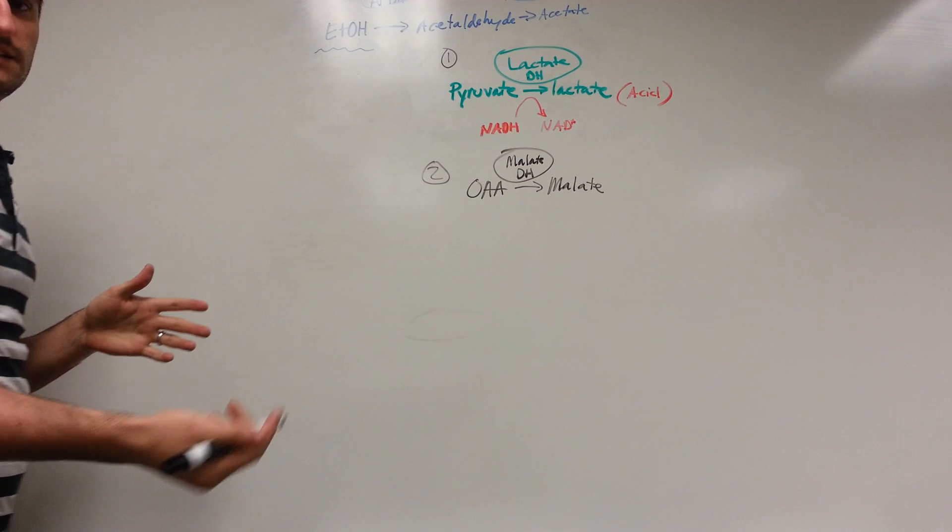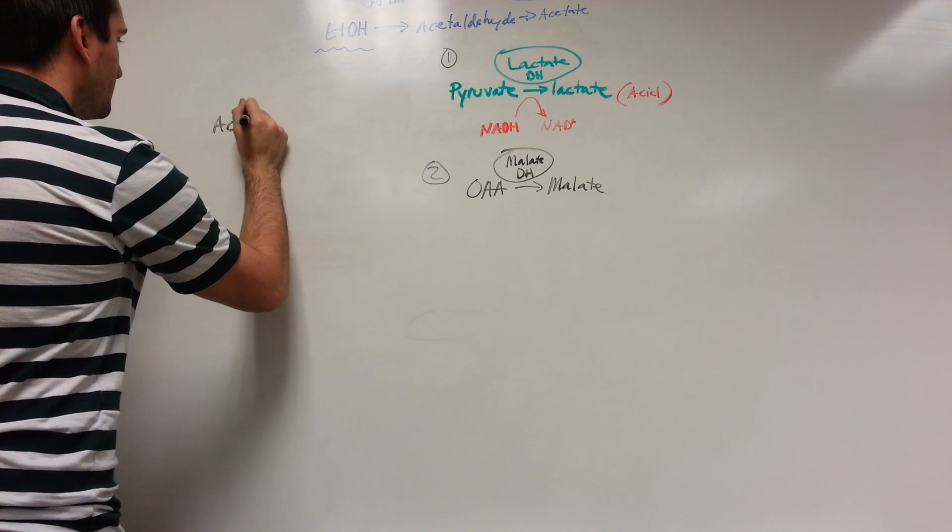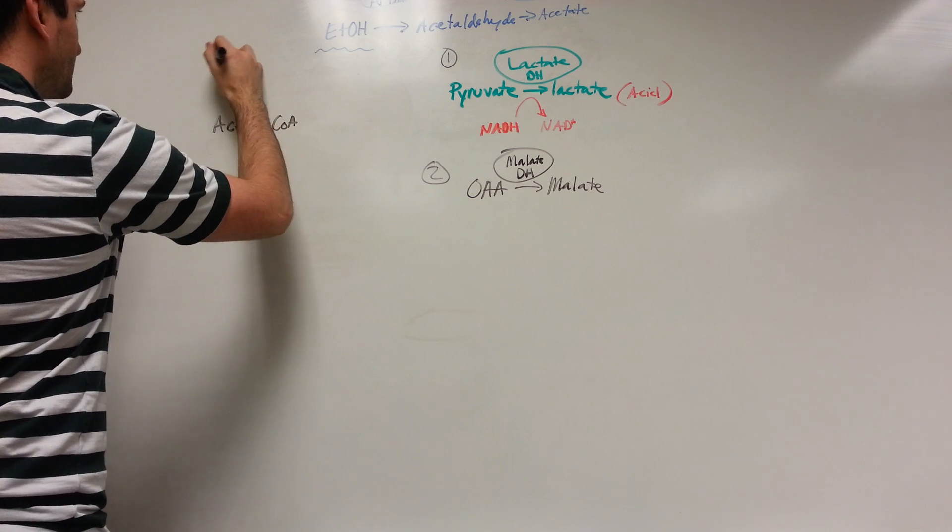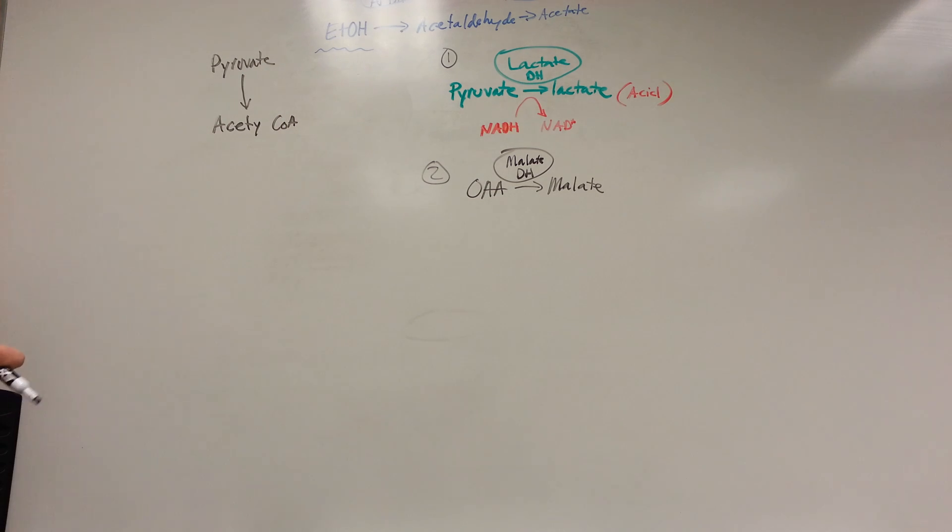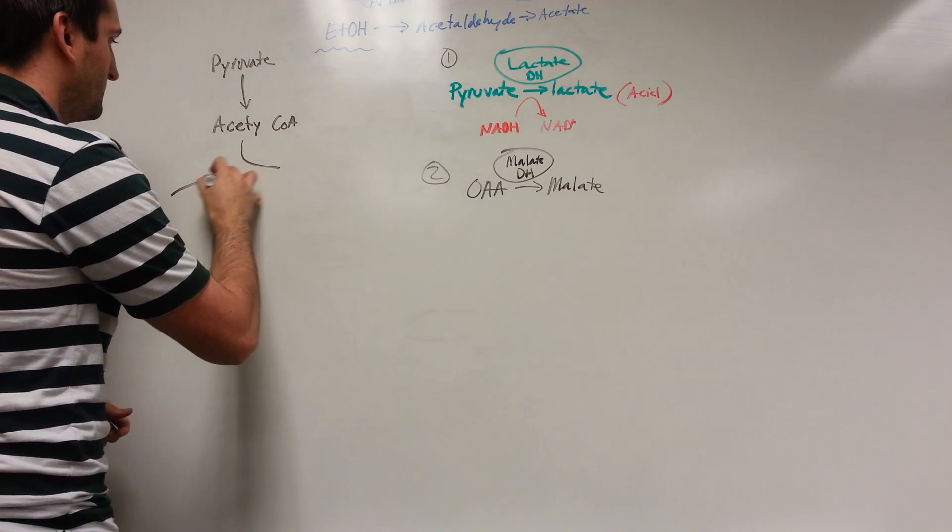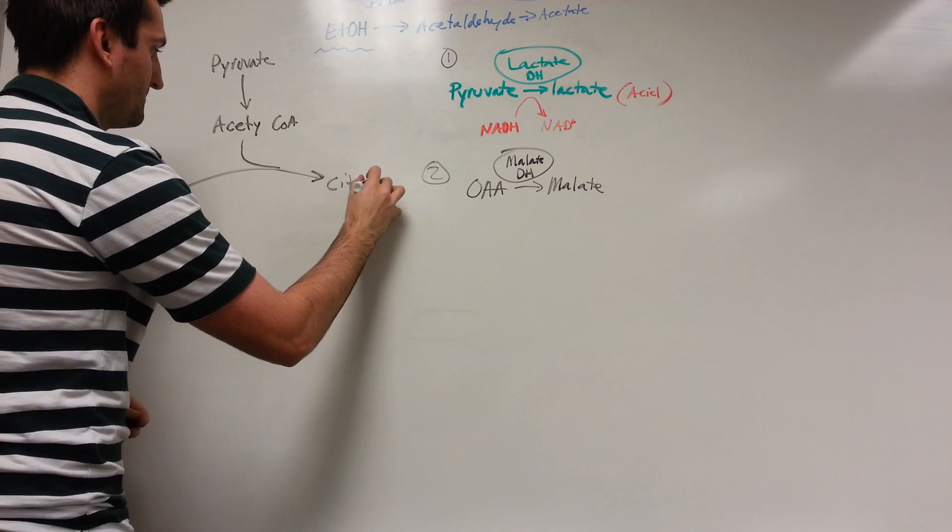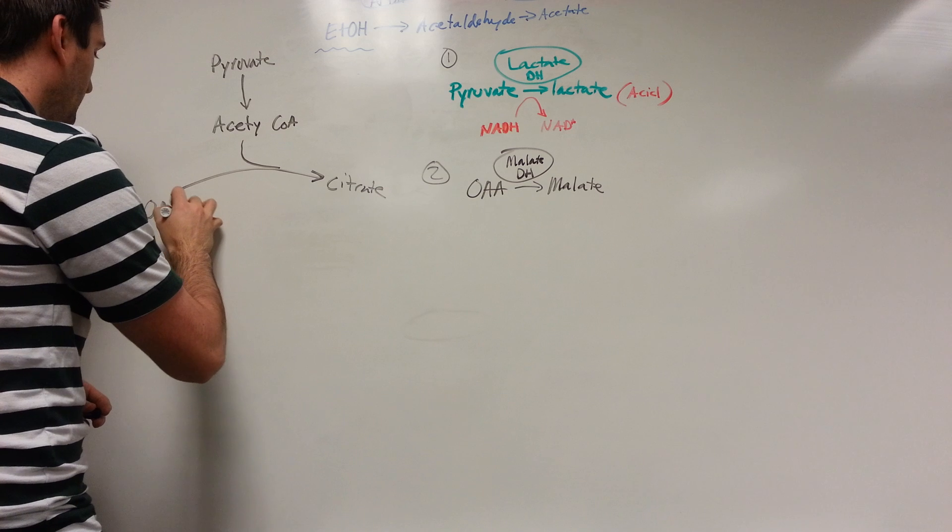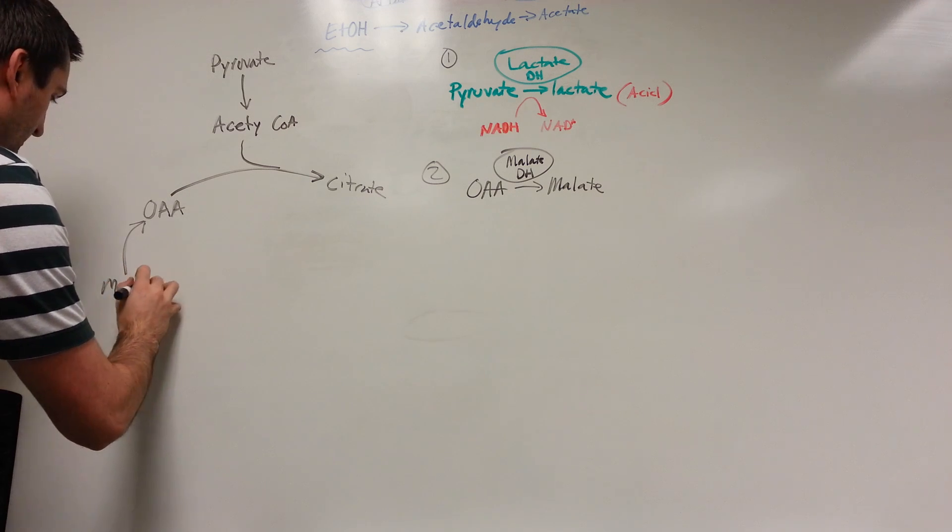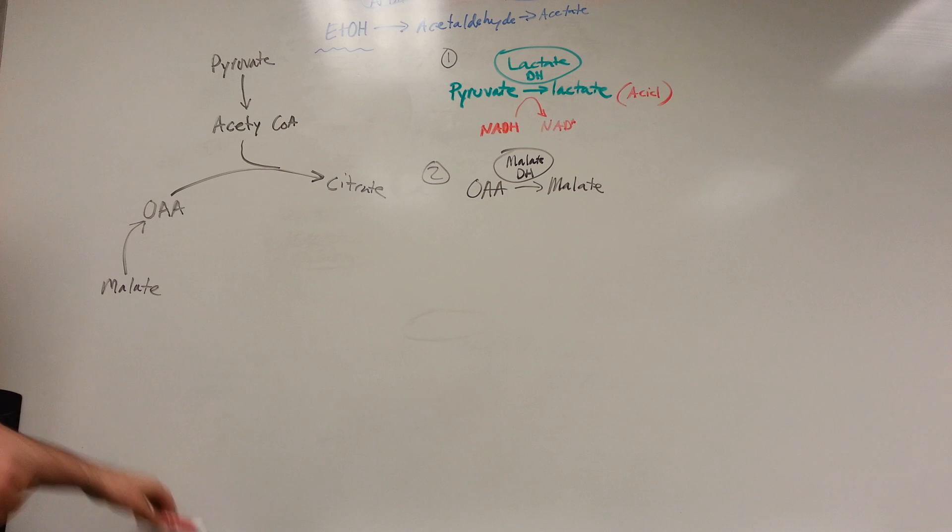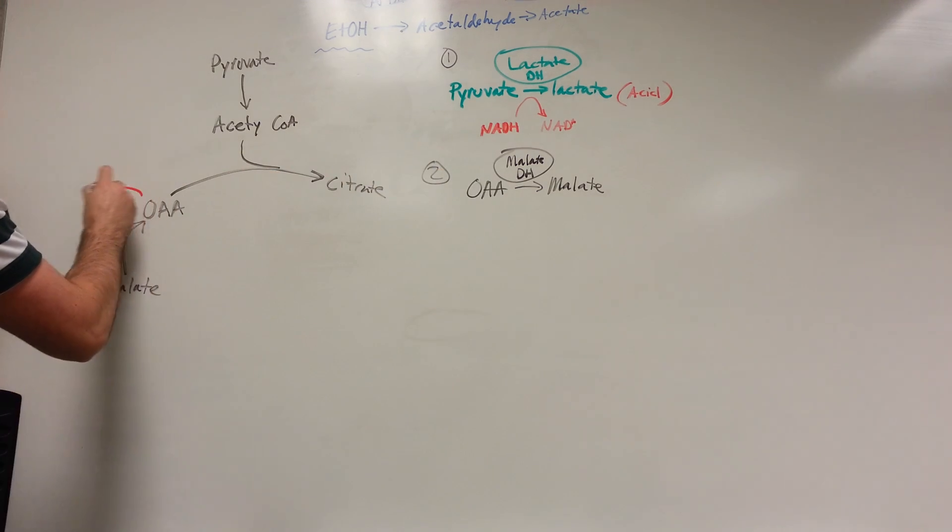Let's revisit that TCA cycle, but not the whole thing. So we have acetyl-CoA. Pyruvate gets broken down by pyruvate dehydrogenase, the decarboxylation reaction. We have citrate, OAA oxaloacetate, and malate. Malate dehydrogenase is going to catalyze the reverse reaction. This is where we're acting.